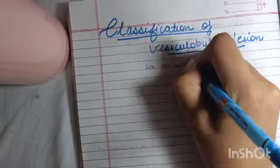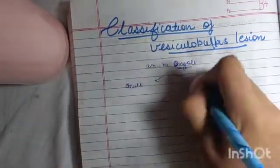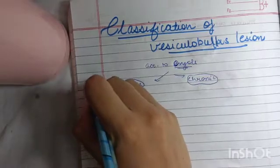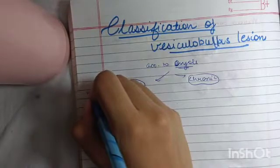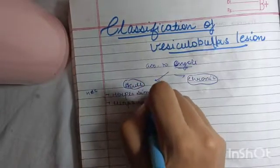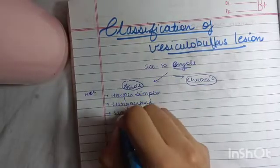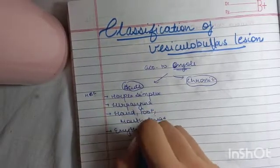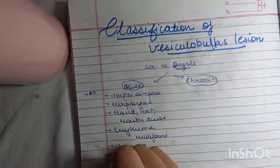Let's start by the first one, according to onset. It is acute or it can be chronic. Now to remember acute, you can remember HV or you can remember HEC. So by H, we have herpes simplex, herpangina, hand foot mouth disease. Then E, we have erythema multiform. C, chicken pox. You can also mention herpes zoster.